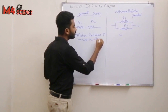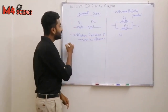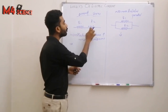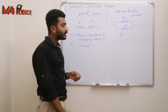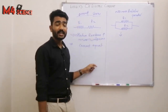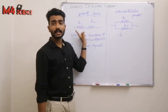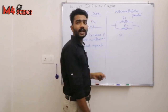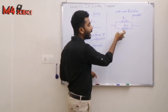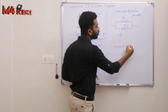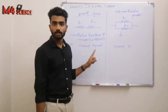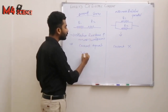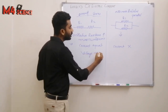In a series connection, the current remains the same throughout. In a parallel connection, the current is equal through each branch — ripple current is equal. The voltage in a series connection is not equal across each component. In a parallel connection, the voltage across each branch is equal.